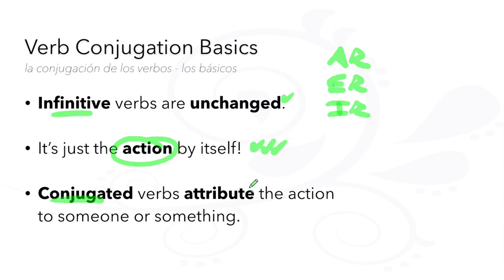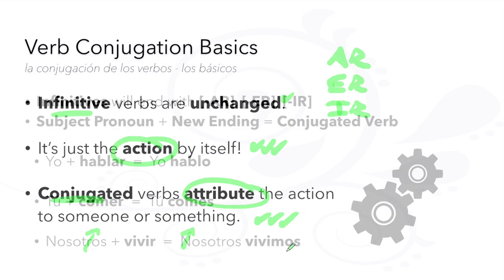Conjugated verbs attribute this action to someone or something. For example: I run, you study, we eat.